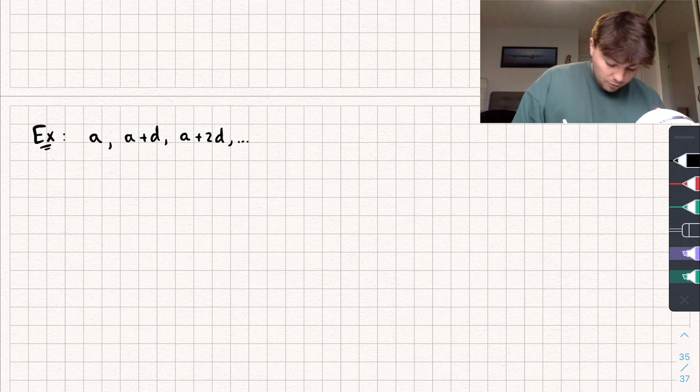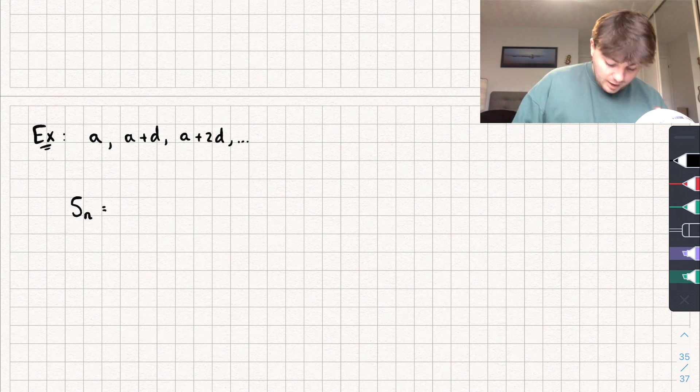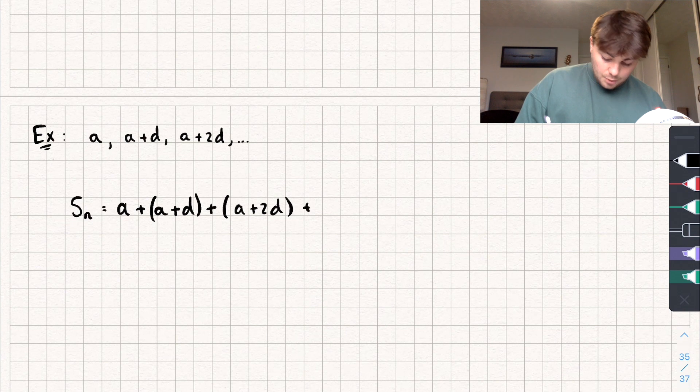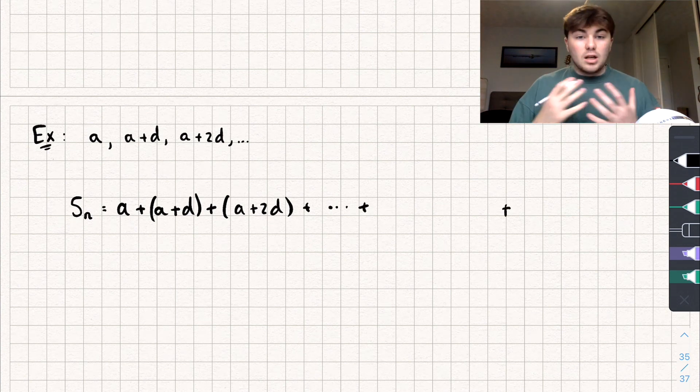We could say that, say we wanted to find the sum of N terms, the first N terms. So we're looking at a generic rule. We'd write it like this, S_N. And that's going to be equal to A plus the second term, which is A plus D plus the third term, A plus 2D, and it would go on forever and ever until we get towards the Nth term. And let's call the Nth term, which is the last term, L.